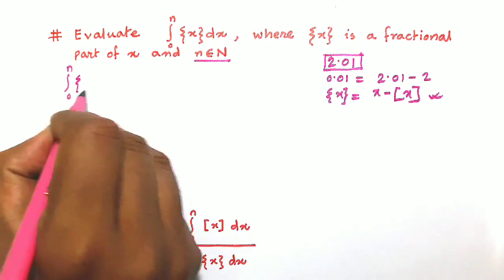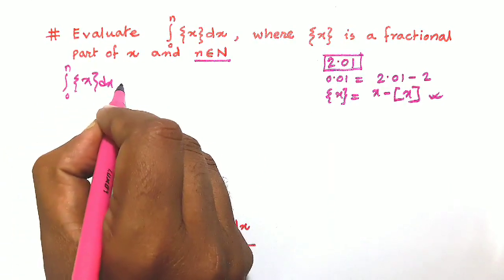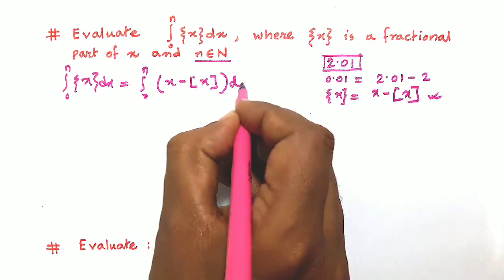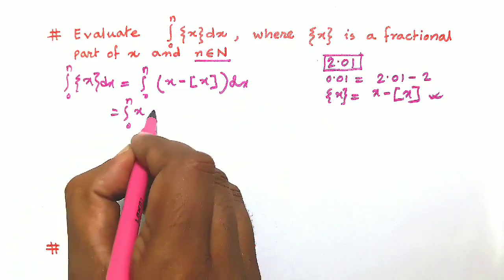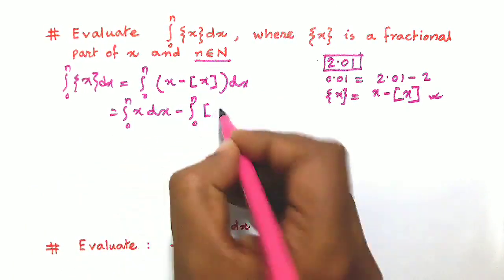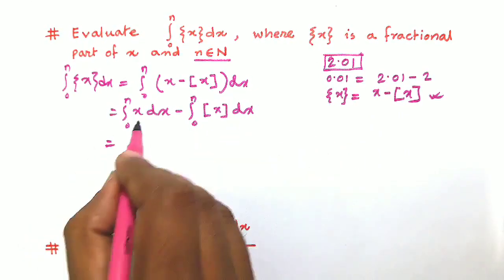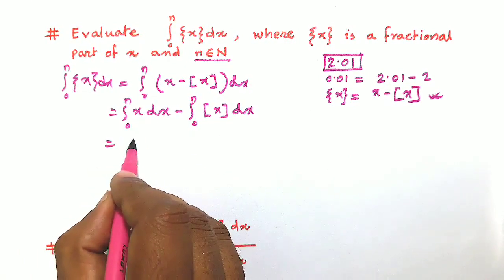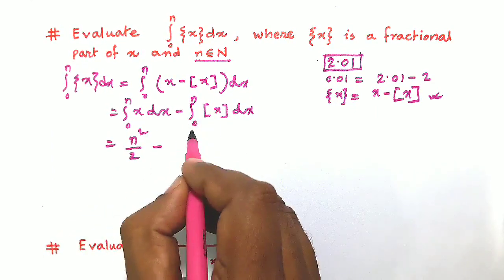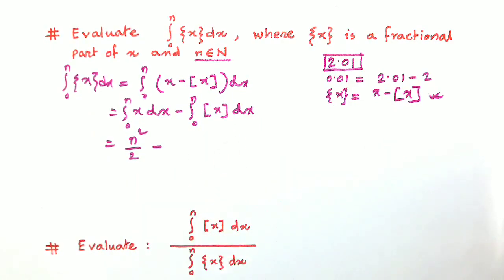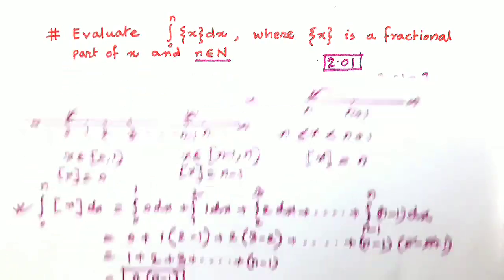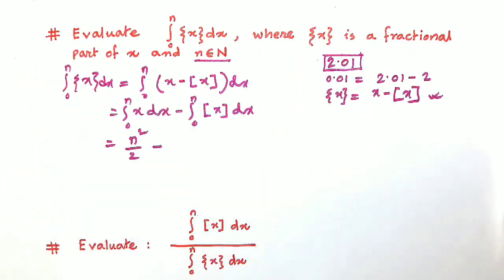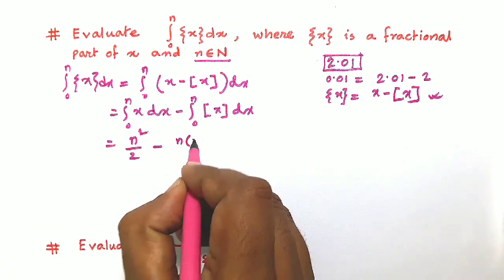Integration from 0 to n of the fractional part of x dx equals integration from 0 to n of (x minus integral part of x) dx. This splits into integration from 0 to n of x dx, minus integration from 0 to n of the integral part of x dx. The integration of x dx is x squared by 2, and with limits 0 to n this gives n squared divided by 2. We subtract the integral we already solved: n(n minus 1) divided by 2.